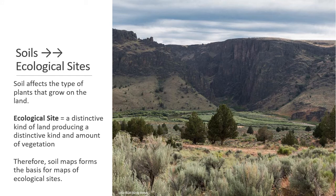Ecological sites are based on the fact that soils affect plant type. An ecological site is defined as a distinctive kind of land producing a distinctive kind and amount of vegetation. We start with soil maps, look at the plants they support, and then examine different communities of plants across an ecosystem. In this picture you can see a sagebrush ecosystem in the foreground, juniper moving in further down on a different soil type, an alluvial area along the river, and a really rocky steep ecological site at the back — all four are distinctive ecological sites.